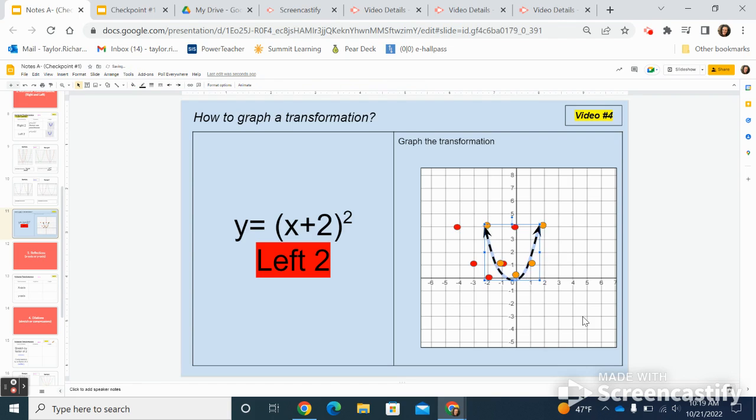And then the last thing I'm going to click this black dotted line and move it to fit my transformation. I just moved that whole graph left two.